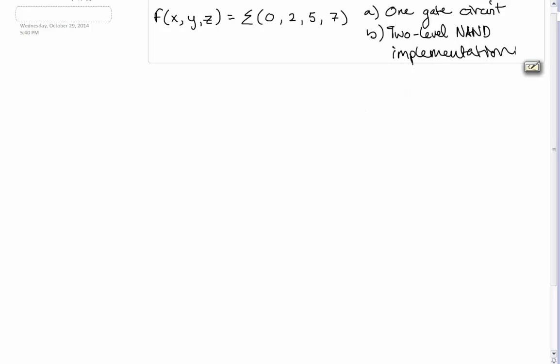Alright, this is the second example video that I'm making, and for this we're going to take a function here, defined by the sigma notation, and we have to find this in the form of a one gate circuit, so we'll have to draw the circuit, and then we'll have to do a two level NAND implementation for our simplified boolean expression.